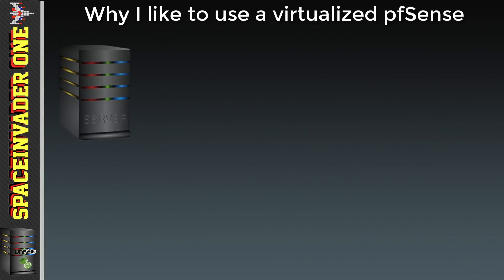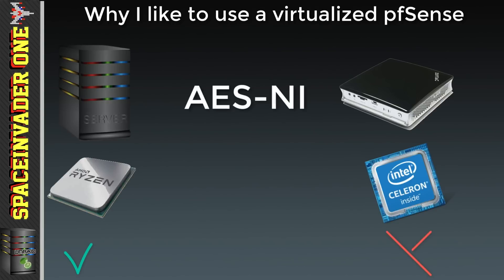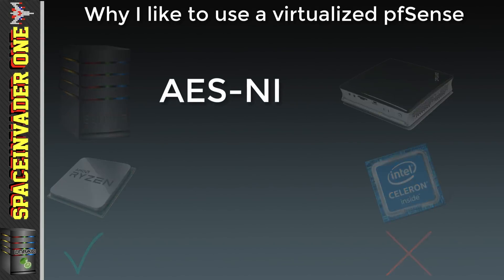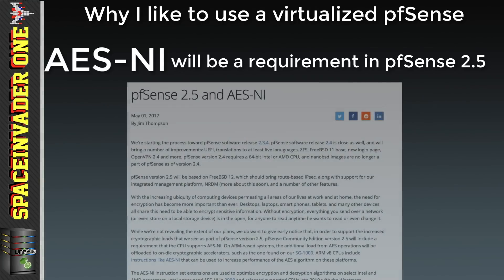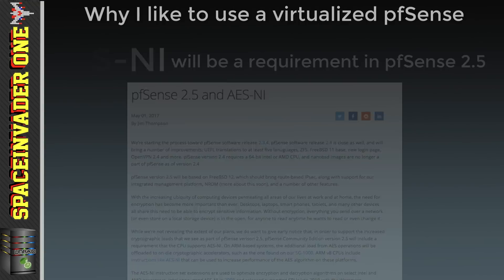Another advantage of running PFSense in a VM is that my server CPU is much newer than the old Celeron in my backup PFSense box, which doesn't support AESNI. That isn't a problem right now, but when the next PFSense version 2.5 comes out, AESNI is going to be a requirement. So it's only going to be my PFSense VM that's going to be able to run the new system.